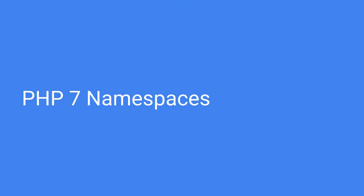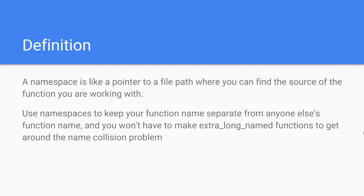A namespace is like a pointer to a file path where you can find the source of the function you are working with. It's basically useful for functions and object-oriented programming. You use namespaces to keep your functions separate from anyone else's function names so you don't have to make extra long named functions to get around the name collision problem. Name collision is just when a name — in this case for a function — already exists.